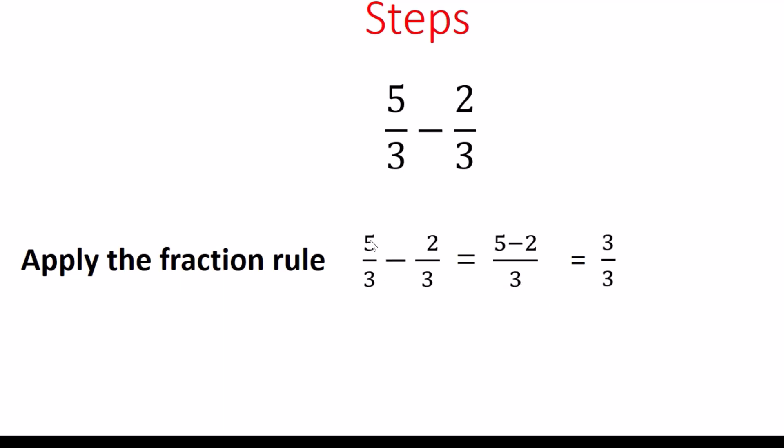And then we subtract on the top. So it became 5 minus 2 divided by 3 and equals 3 divided by 3.